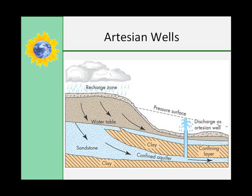This diagram shows the development of an artesian well. When an aquifer is contained between two impermeable rock layers and part of the aquifer is exposed higher than the well, water will flow from the well due to the pressure of the water that is higher than that of the well.